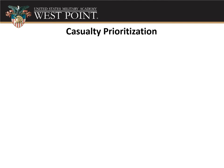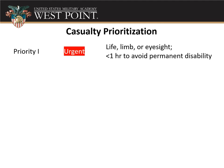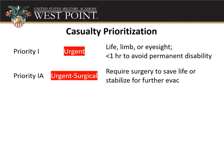There are four priority levels. Priority one is urgent — these involve potential loss of life, limb, or eyesight, and if the person doesn't get to adequate care in less than an hour, there could be permanent disability. There is also subcategory 1A for urgent surgical, where surgery is required to save a life or to stabilize the patient until further evacuation can occur.